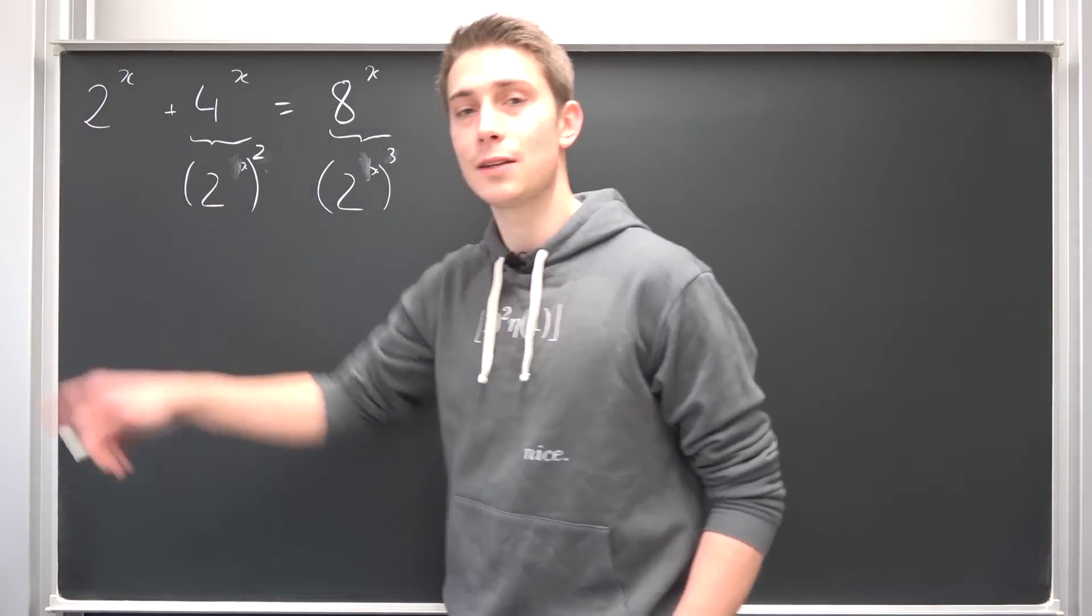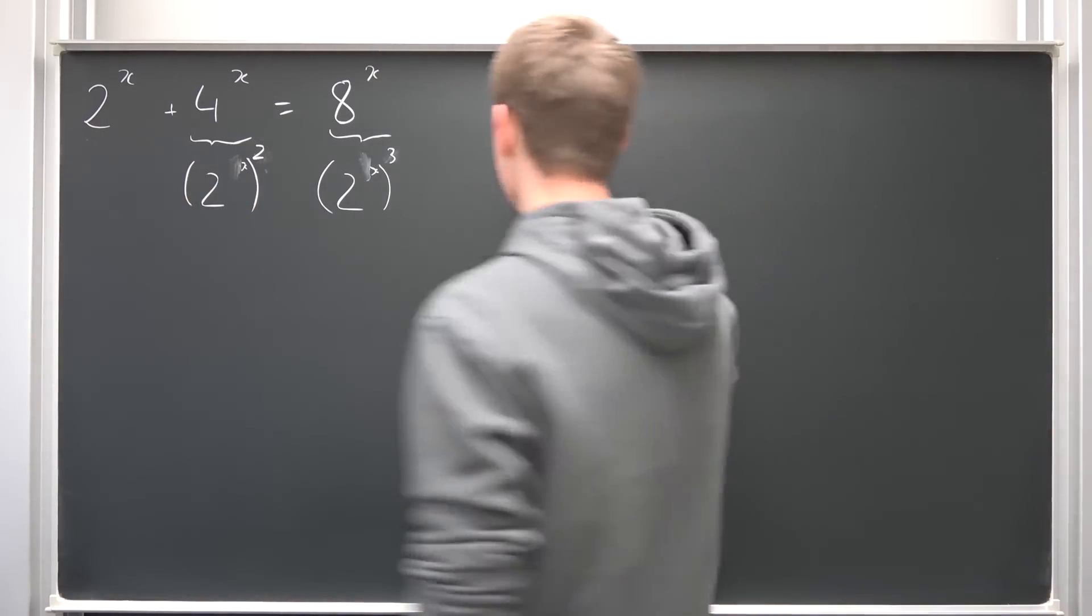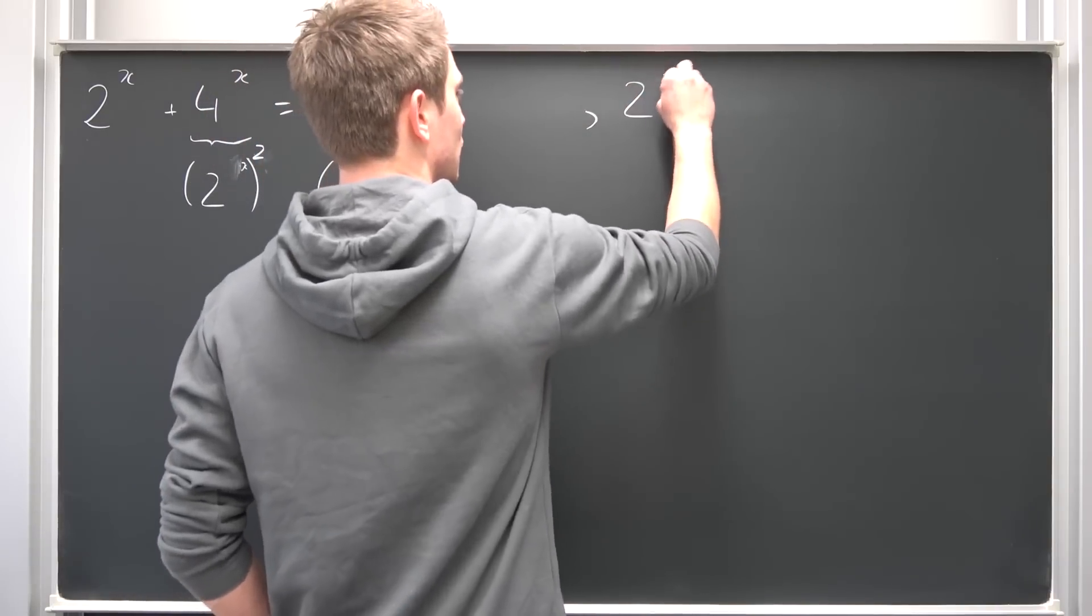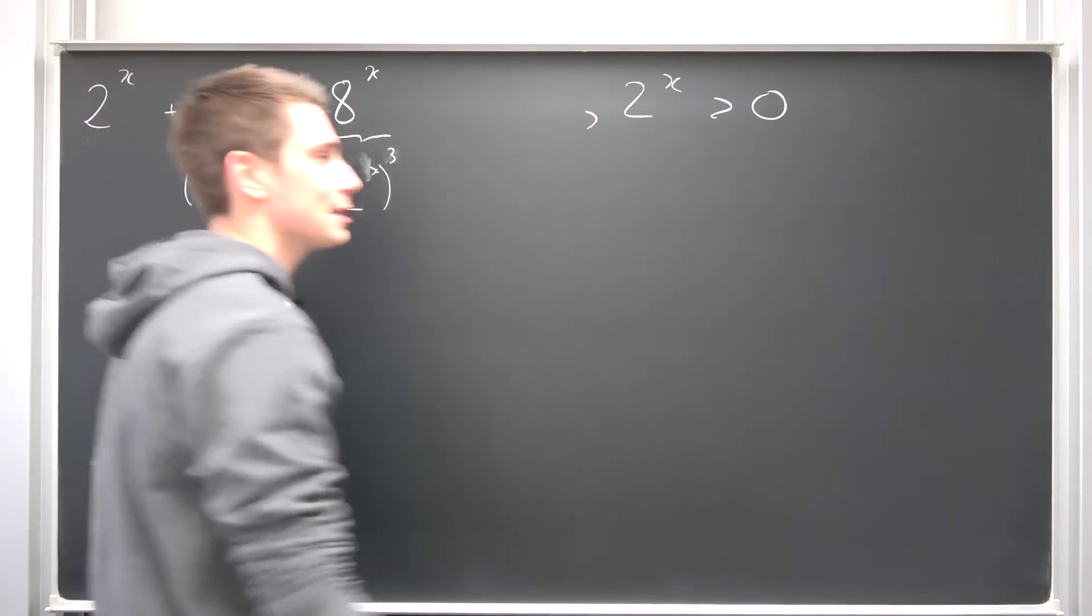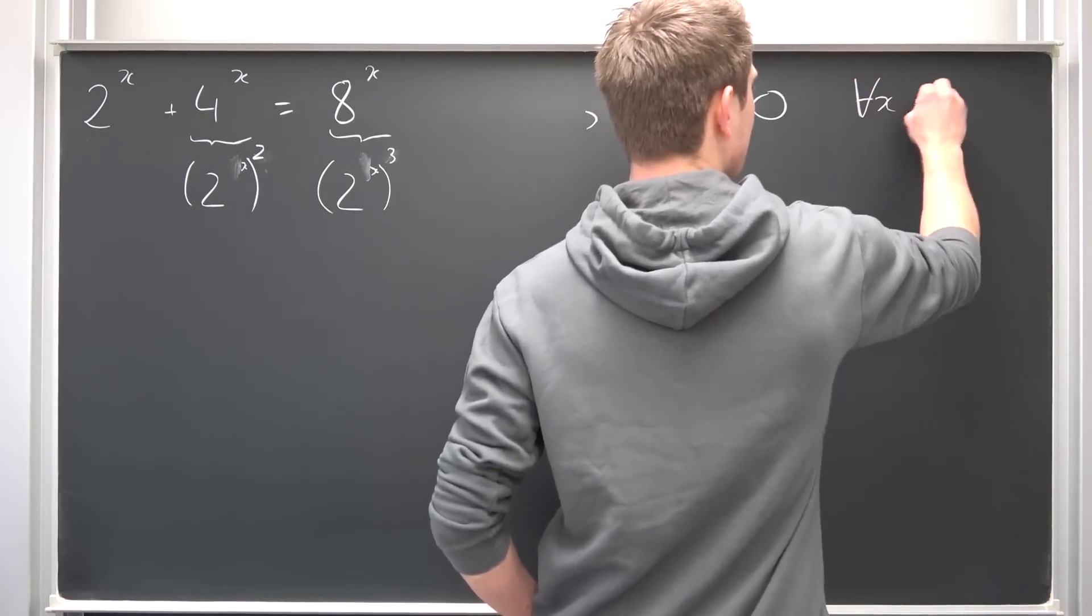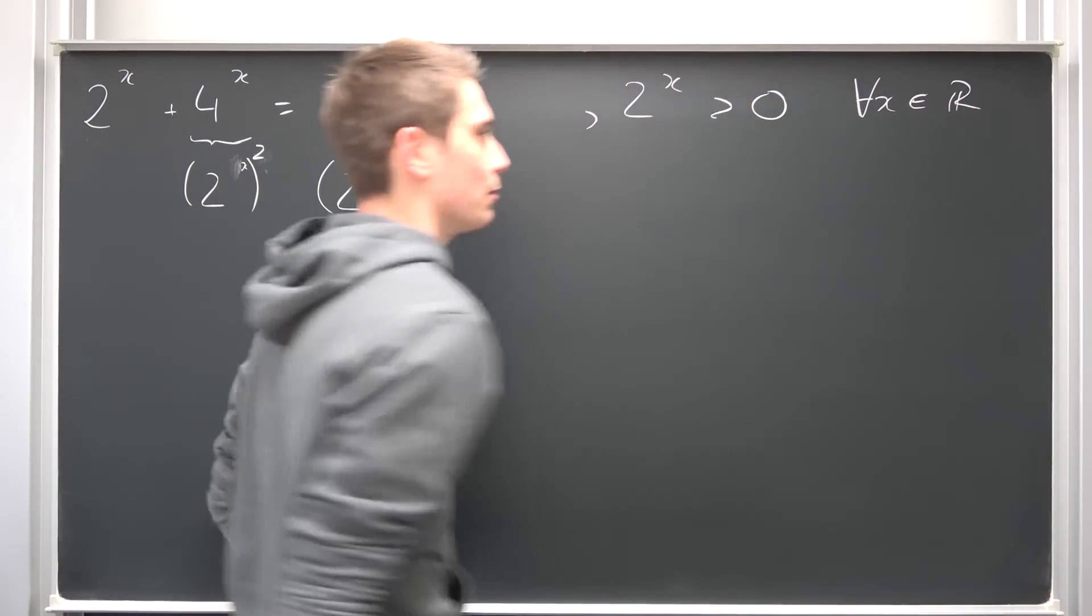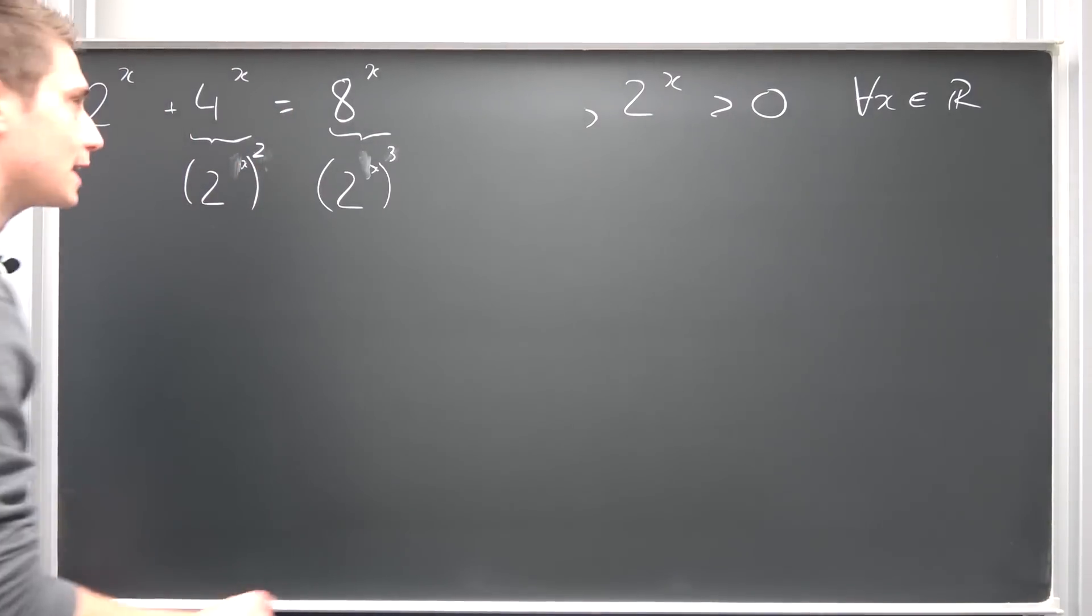Actually, it's always greater than zero. Let us put this into some notation. It's always strictly greater than zero for all x out of the real numbers. Let us divide both sides by 2 to the x power.